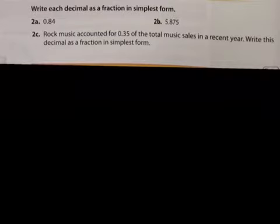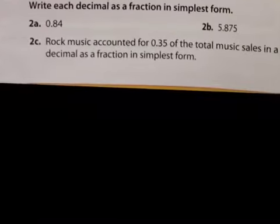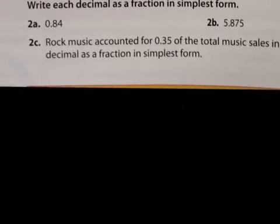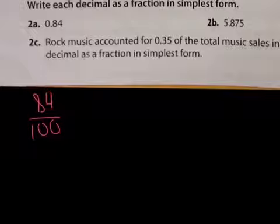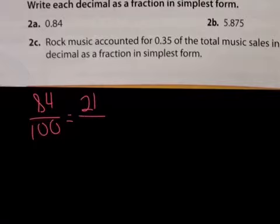Let's try these. First, we have 0.84 — that's 84 hundredths. When you simplify, you know this is divisible by 4. Any number ending in 4 or 8 means the whole number is divisible by 4. So divide both by 4 and you get 21 over 25. That's your answer.